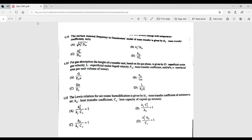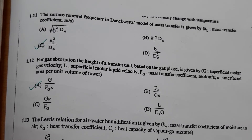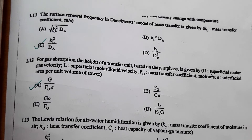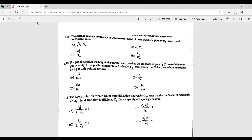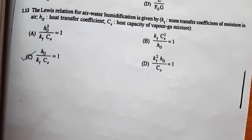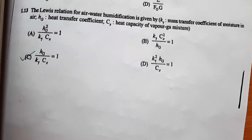In question 1.11, you have to give the relation for surface renewal theory. The correct option is C: KL²/DA. Moving to 1.12, for gas absorption, the height of a transfer unit based on the gas phase is given by option A. For question 1.13, the Lewis relation for air-water humidification is given by option C. For questions 1.11, 1.12, and 1.13, refer to any mass transfer textbook for detailed derivations — it's better to memorize these relations.